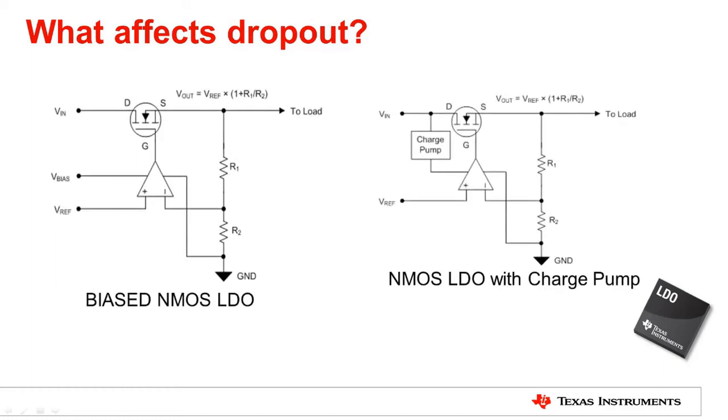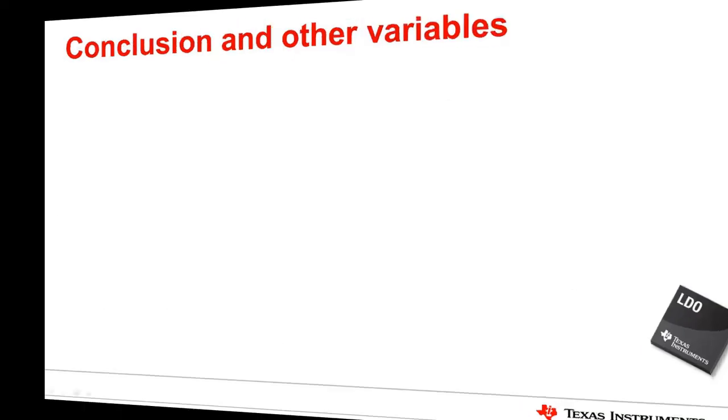But how can we solve the problem of low dropout in an NMOS? By using architectures with a bias pin, or internal charge pump, we can effectively increase the voltage for the error amplifier, thus achieving a high VGS, without the constraints of the input voltage. This can ensure that an NMOS architecture also has a lower dropout.